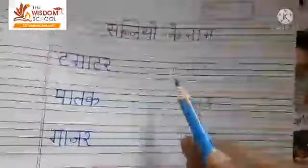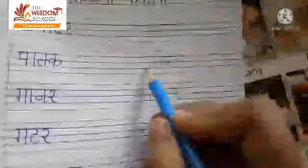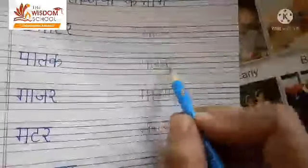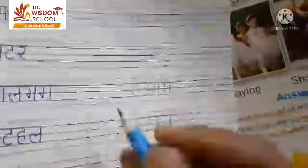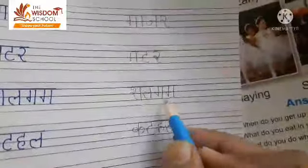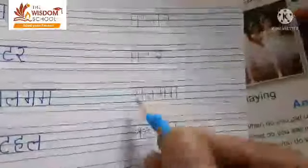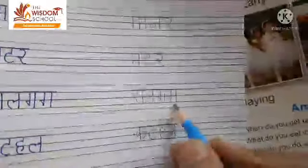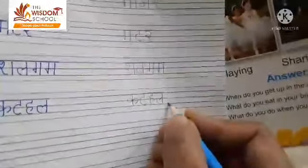Starting from the first: tamatar, tamatar. Paalak, paalak. Gajar, gajar. Matar, matar. Shalgum — yad hai, isko aise bhi read kar sakte ho, tu tu ka pair bana ke read karo — shalgum, shalgum. Next: kathal, kathal. Thik hai bachay.